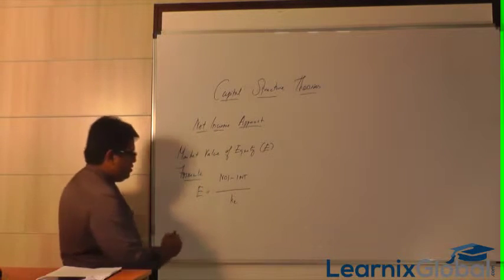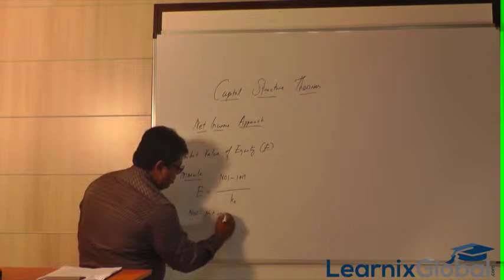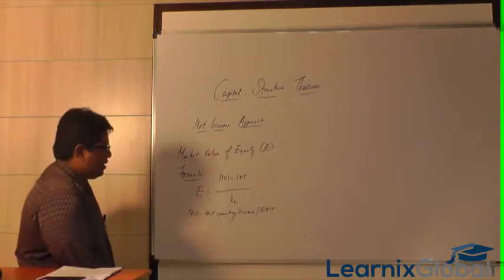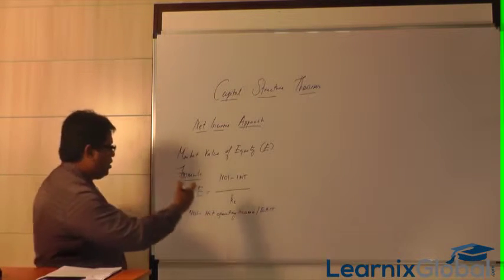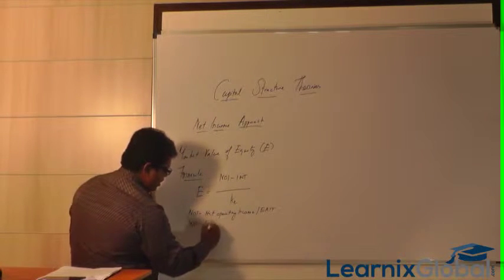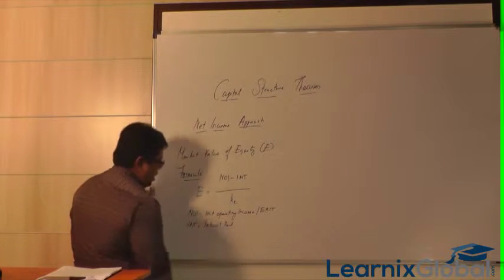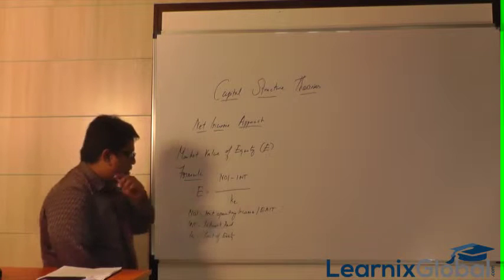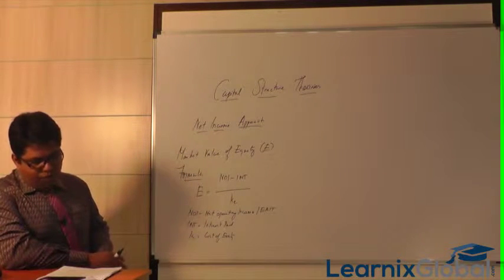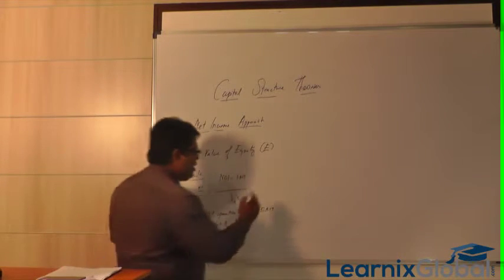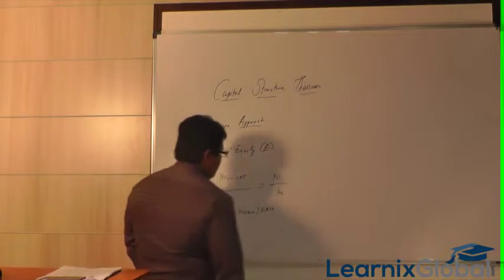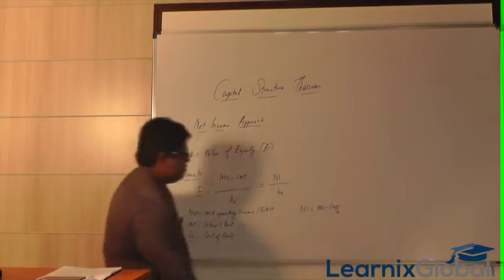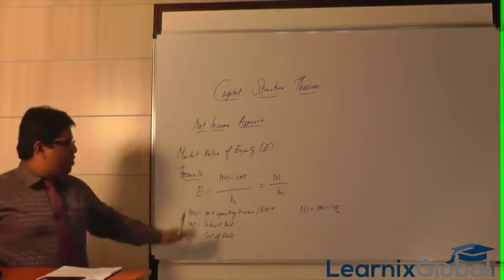Here, NOI means Net Operating Income, that is EBIT — Earnings Before Interest and Tax. INT is the interest paid, and KE is the cost of equity, that is the percentage cost of equity. This can also be written as Net Income divided by KE, where Net Income equals NOI minus INT.